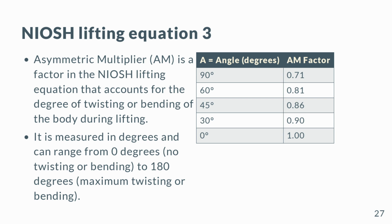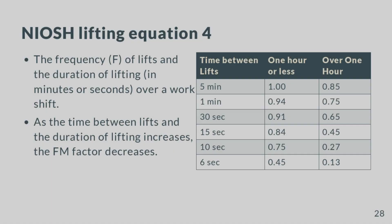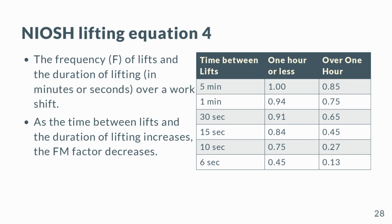The Asymmetric Multiplier is a factor in the NIOSH Lifting Equation that accounts for the degree of twisting or bending of the body during lifting. It is measured in degrees and can range from 0 degrees (no twisting or bending) to 180 degrees (maximum twisting or bending). The Frequency Multiplier (Fm) accounts for the frequency of lifts and the duration of lifting in minutes or seconds over a work shift. As the time between lifts and the duration of lifting increases, the Fm factor decreases, indicating a greater risk of injury due to fatigue or overexertion.